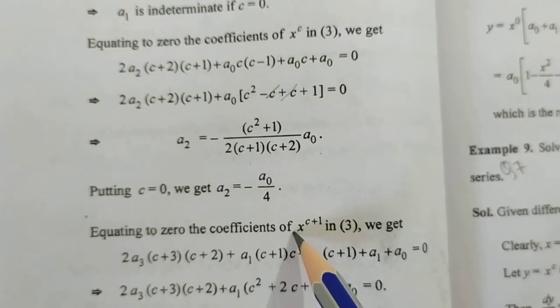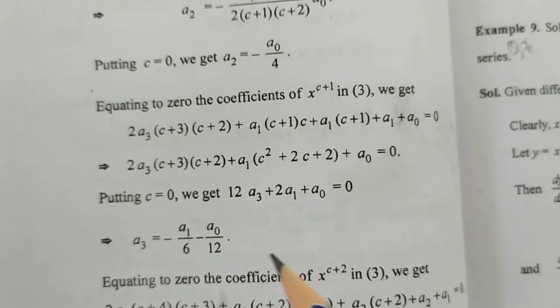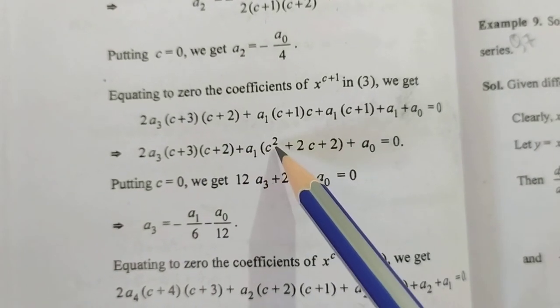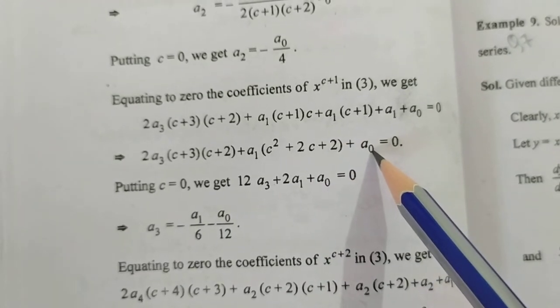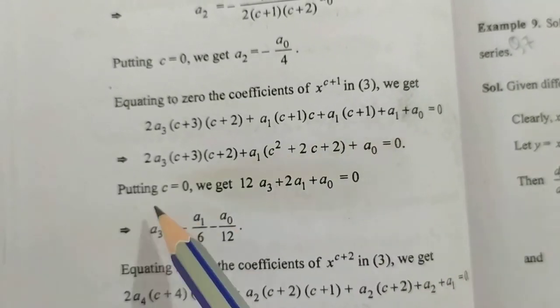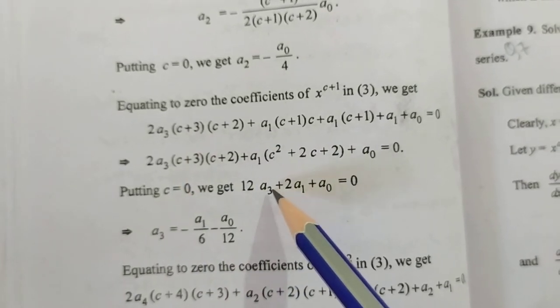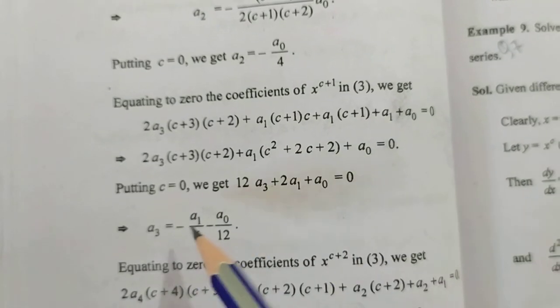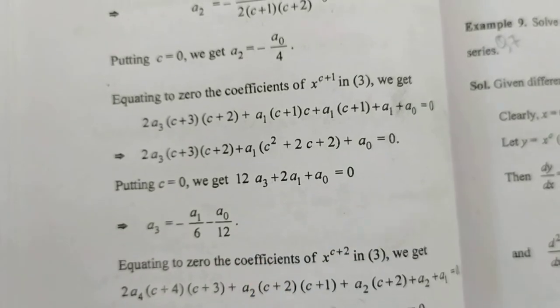Equating to zero the coefficient of x^(c+1) in equation 3, we get 2a₃(c+3)(c+2) + a₁(c²+2c+2) + a₀ = 0. Putting c = 0, we get 12a₃ + 2a₁ + a₀ = 0, so a₃ = -a₁/6 - a₀/12.